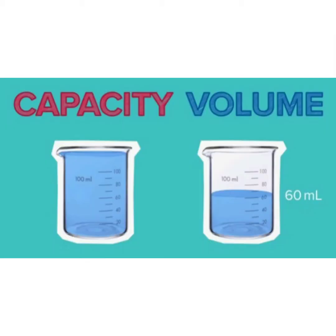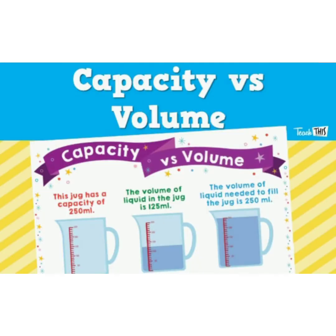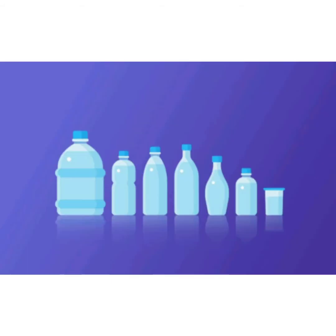The maximum volume of a liquid that can be stored in a container is called the capacity of the container. For example, if the capacity of your bottle is 200 ml, it means it can contain any volume of liquid up to 200 ml. By using measuring containers, we can measure the volume of a liquid. These containers have fixed capacities but different shapes and sizes.